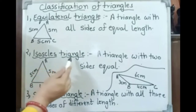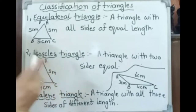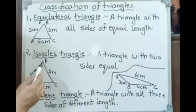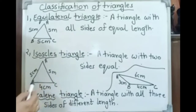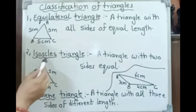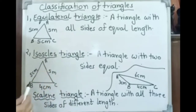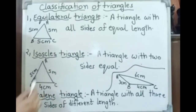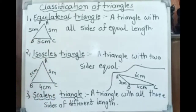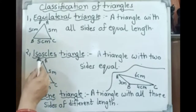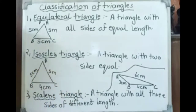Isosceles triangle — a triangle with two sides equal. AC is 5 cm, BA is 5 cm, BC is 4 cm. So AB and AC, both sides are equal. These types of triangles are called isosceles triangles.